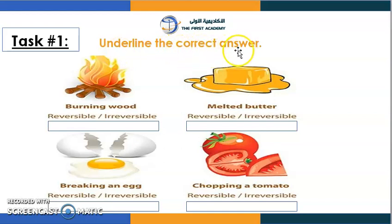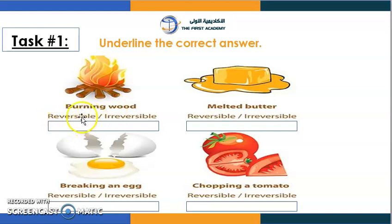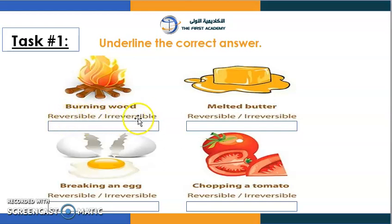As I gave you the first example, I hope you know the answer for burning wood. I'll give you some time to think... Burning wood is irreversible because, as I said, it will turn to ashes and never come back.